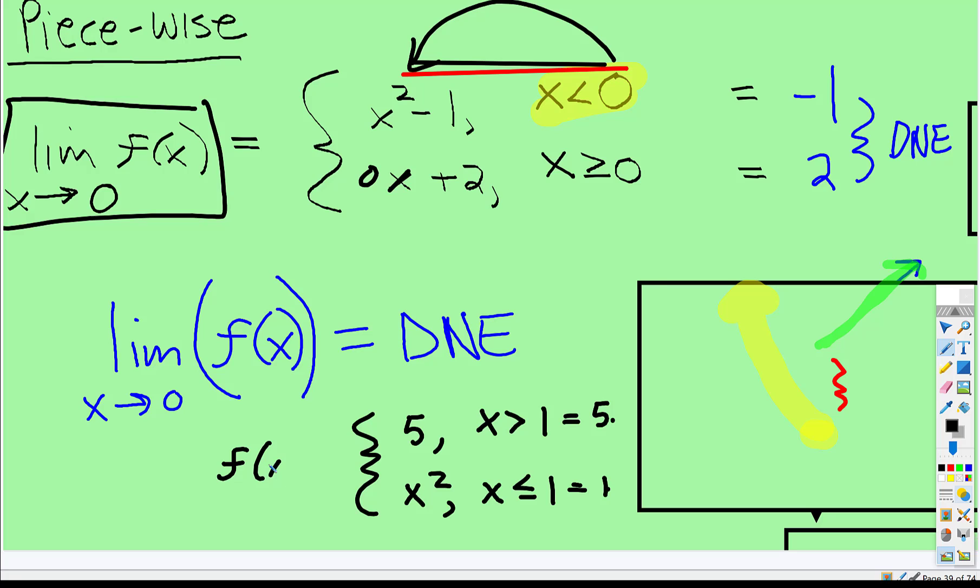So if this is f of x, and we're trying to find the limit as x approaches one, then you write the limit as x approaches one, f of x is equal to does not exist.